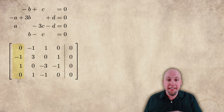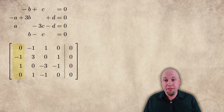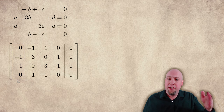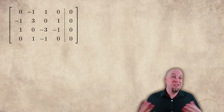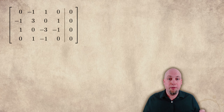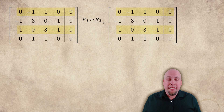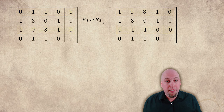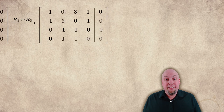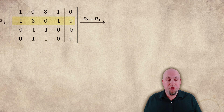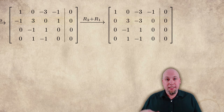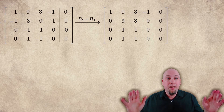For example, that first column — 0, -1, 1, 0 — tells me that the coefficients of a (the first variable) in the equations are 0, -1, 1, 0. Similarly for the other columns representing variables b, c, and d. Now that we have the augmented matrix, we do row operations. I'm going to go all the way to reduced row echelon form. First, I'll swap rows one and three — now I've got a leading entry of 1 in the top left corner. Then I'll add row one to row two to fix up that first column and turn it into 1, 0, 0, 0.